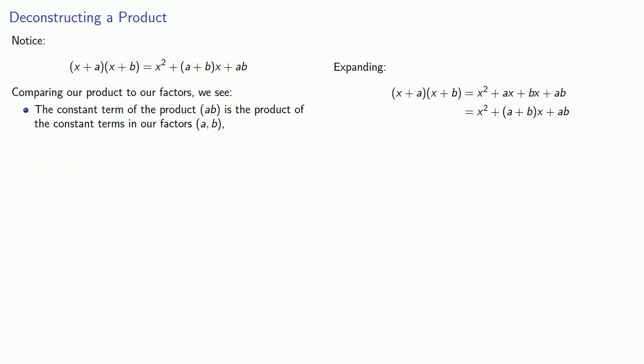Now let's compare our product to our factors. If we do that, we see that the constant term of the product, ab, is the product of the constant terms in our factors, a and b. Moreover, the coefficient of x in our product, a plus b, is the sum of the constant terms in our factors, again a and b.